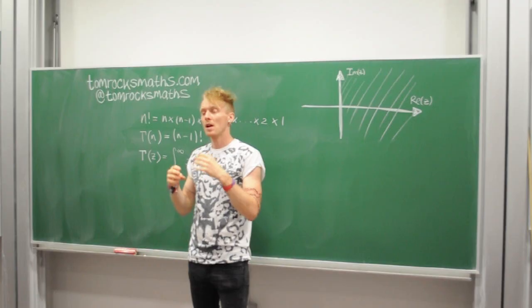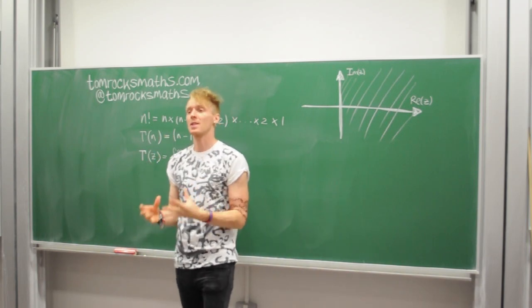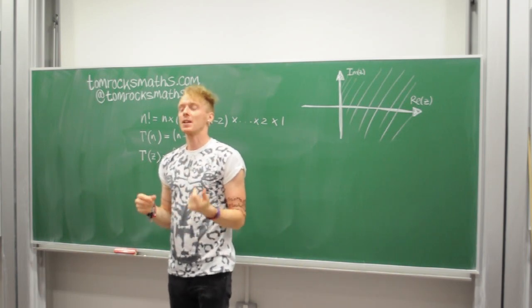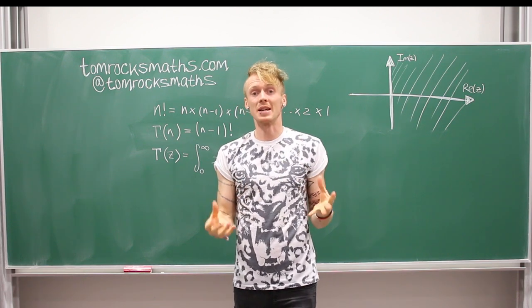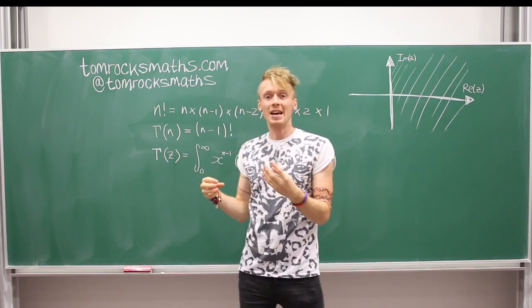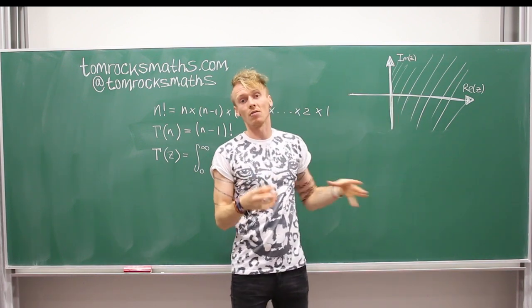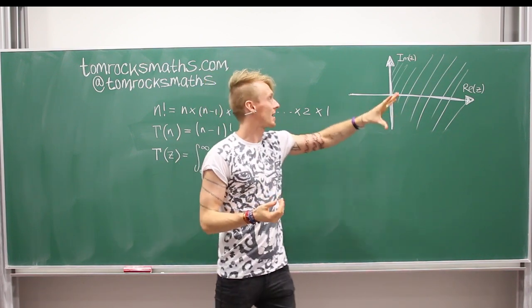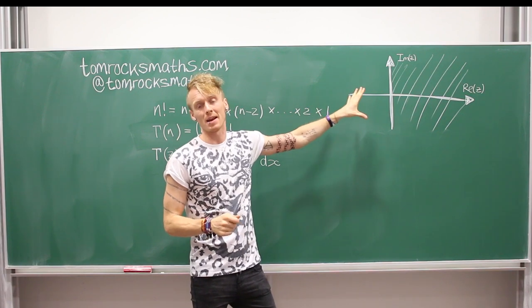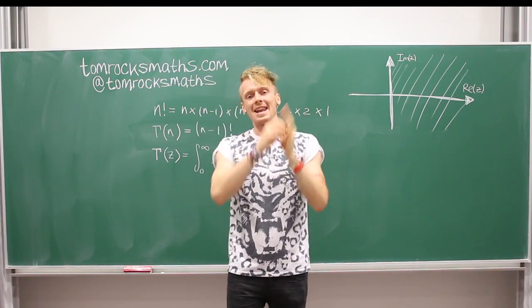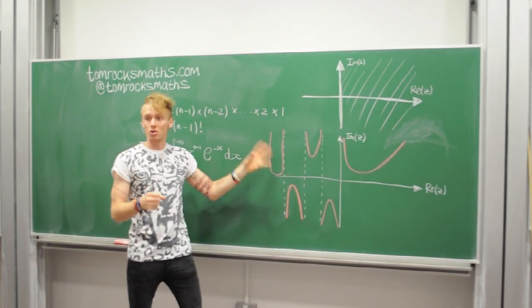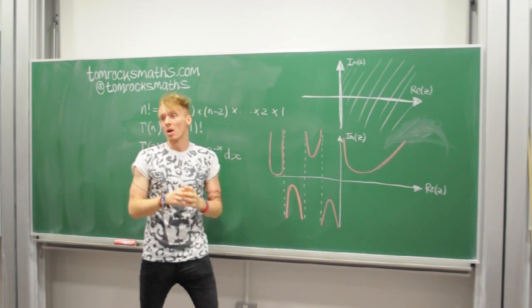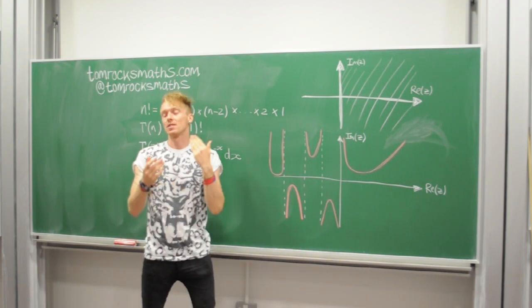And then to get a completely well defined mathematical function, we use a trick in complex analysis which is called analytic continuation. And basically here what we can do is say, because this integral and this function is well defined on the entire right-hand side of the complex plane, we can actually extend it via analytic continuation to be valid also in the left-hand side of the complex plane, except for the negative integers. And so this graph right here shows you the full extent of the gamma function for almost any value for all complex numbers except negative integers.